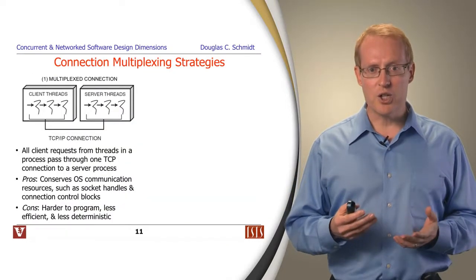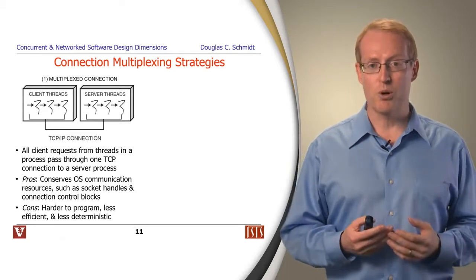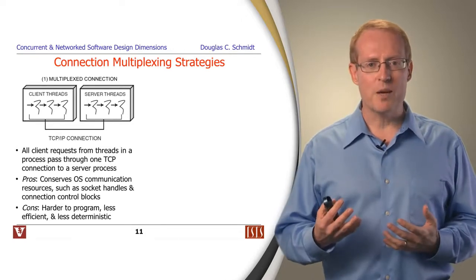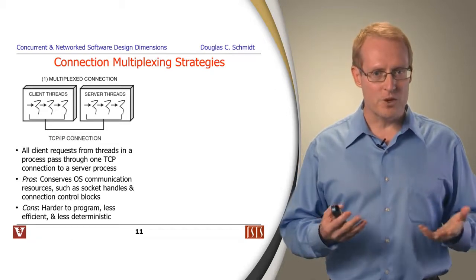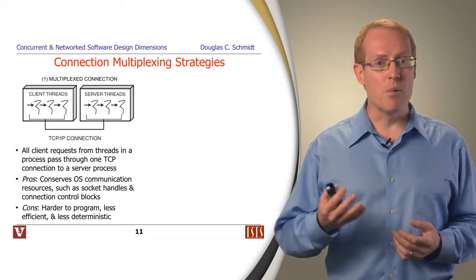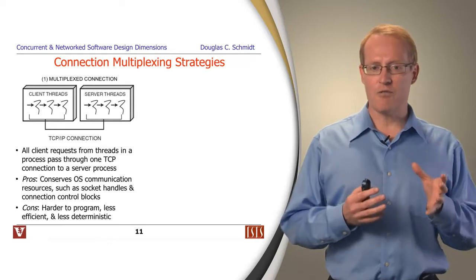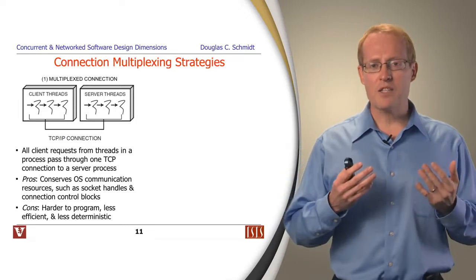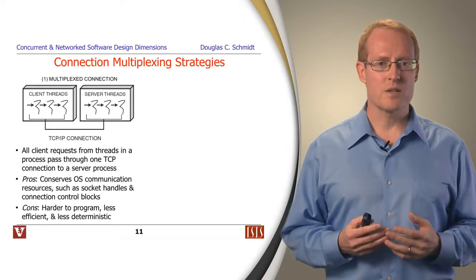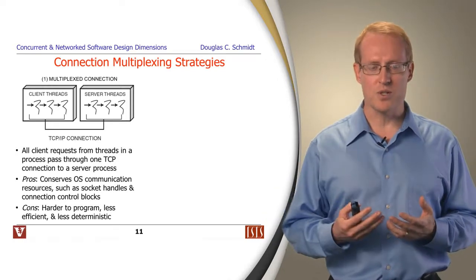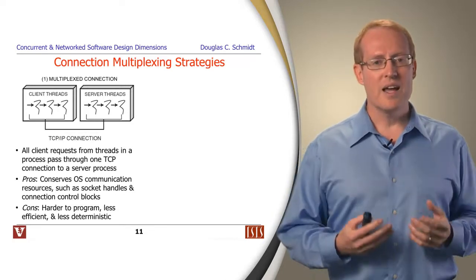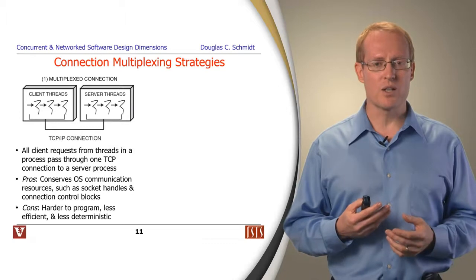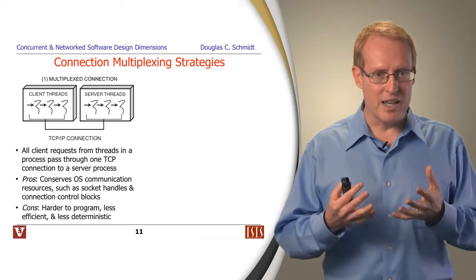Another design dimension has to do with connection multiplexing. Let's assume for the moment we're using a connection-oriented protocol like TCP. If you start to build higher-level middleware and services and applications, one thing you have to think about is how you want to use those connections in your network software. One way to do it is to use what's called a multiplexed connection. In this approach, all client requests from threads within a process, or perhaps multiple processes on the same machine, pass via a single TCP connection to a server process. The nice thing about this approach is it conserves OS resources. You only have to manage one connection per unit of multiplexing, and that means that you don't have to have as many sockets, TCP IP control blocks, and so on, which could be important in some environments where you're limited in the amount of resources you have at your disposal.